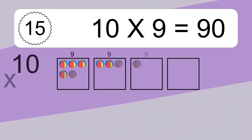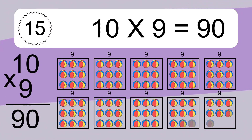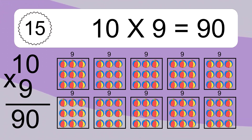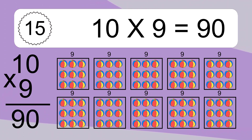10 times 9 equals 90. We have 10 boxes, and each box has 9 colorful balls inside. If you count all the balls in all the boxes together, you will have 10 times 9 balls. This equals 90 balls.